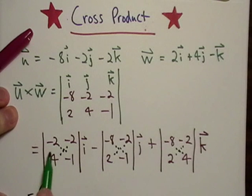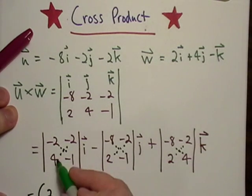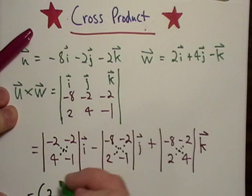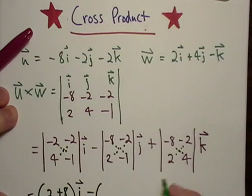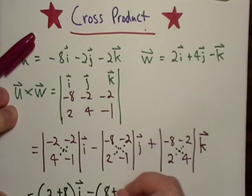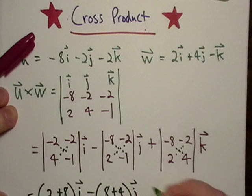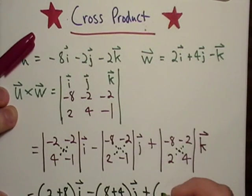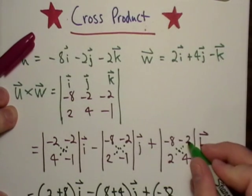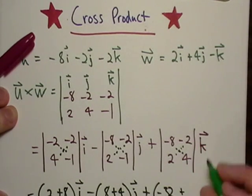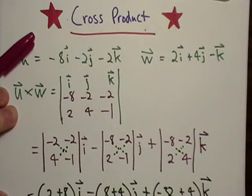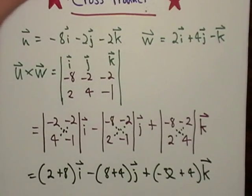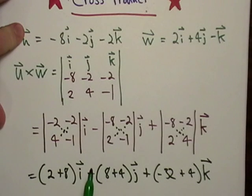We got negative two times negative one is just two minus negative eight is plus eight. Now I've got negative eight negative one. That's a positive eight minus negative four. Minus negative four is plus four. Plus, well, we got negative 32 minus negative two, so that's plus or minus negative four, so that's plus four. Oh my God. I did the whole thing without putting it on the screen. All right. You see it now. So we got that.